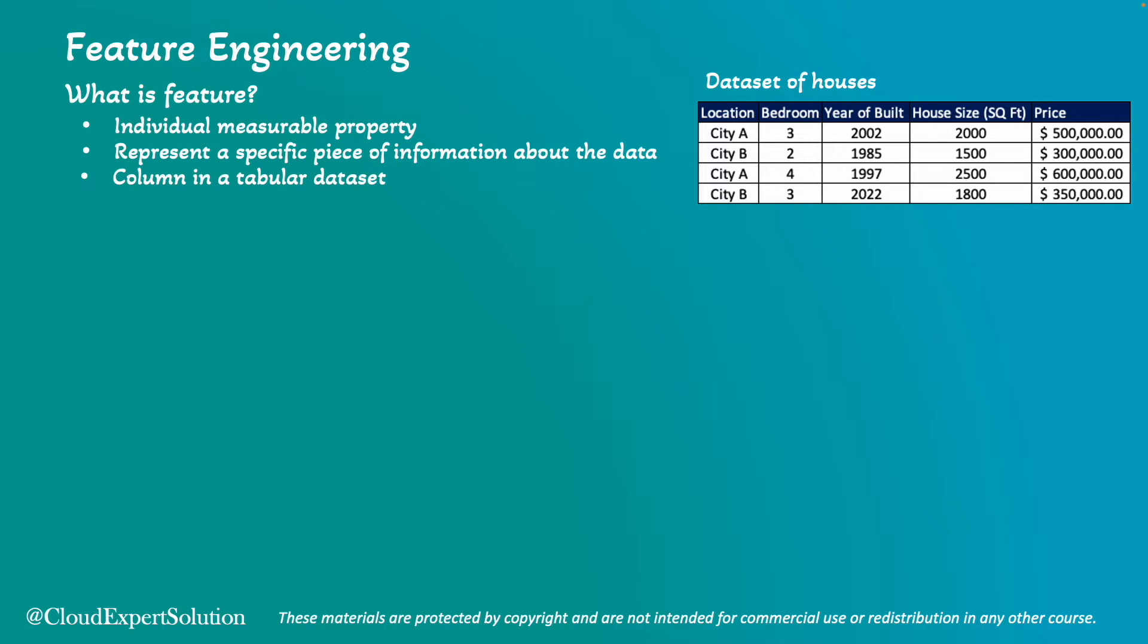Like number of bedrooms is a feature, year of built is another feature for the dataset. Why features are important? Because features are the input that machine learning models use to find correlation during model training. And post-training, the machine learning model uses these features to predict outcome. That is why the quality and relevance of features directly affect the accuracy and effectiveness of the ML model.